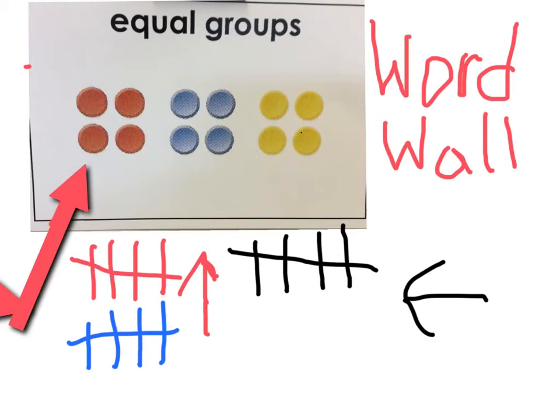But an equal group can be in gym class or outside. Equal groups could be, like, if you're making teams for a game. Equal groups isn't just tallies or chips. Equal groups can be anything. It can be your pencils, your action figures, anything.